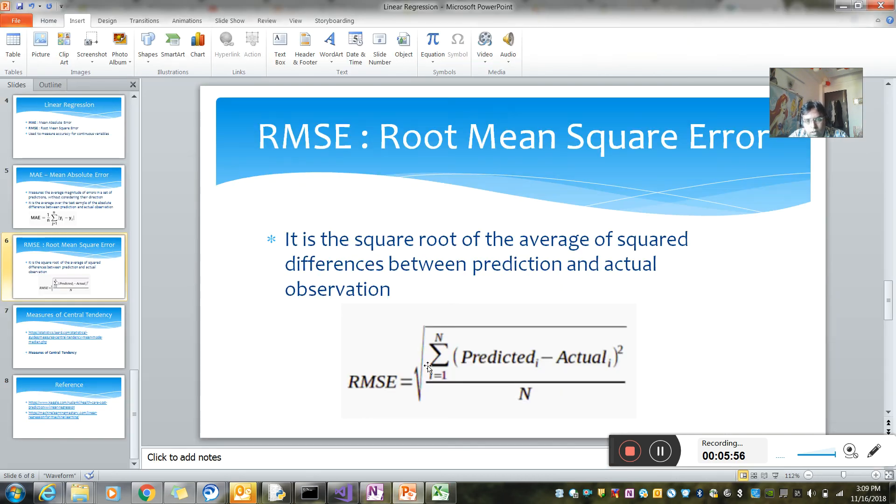Now, coming back to the formula, it says you take the square root of predicted value minus the actual value, take a summation, divide by the number of samples, and then take the overall square root. That is how we actually calculate the RMSE.